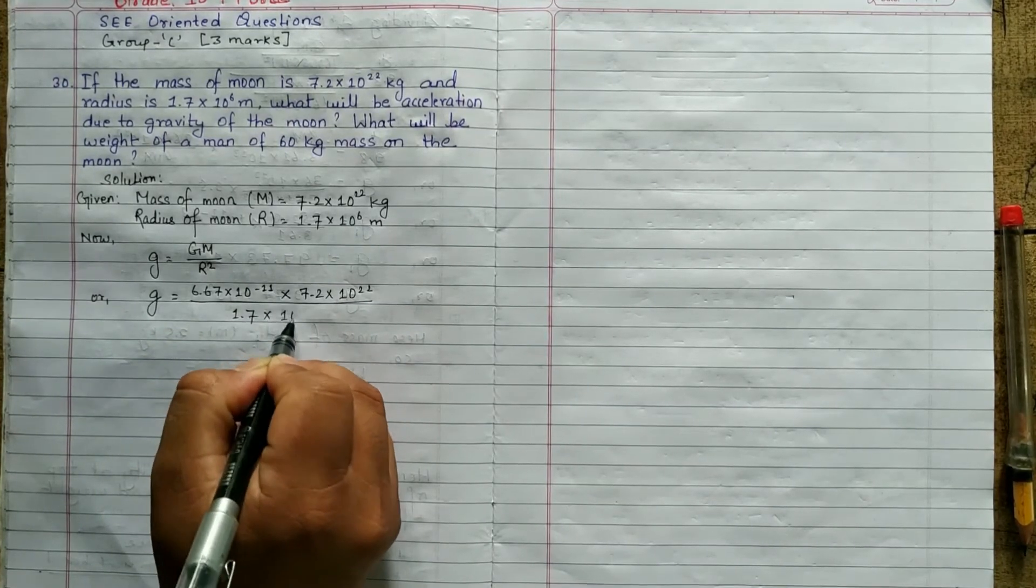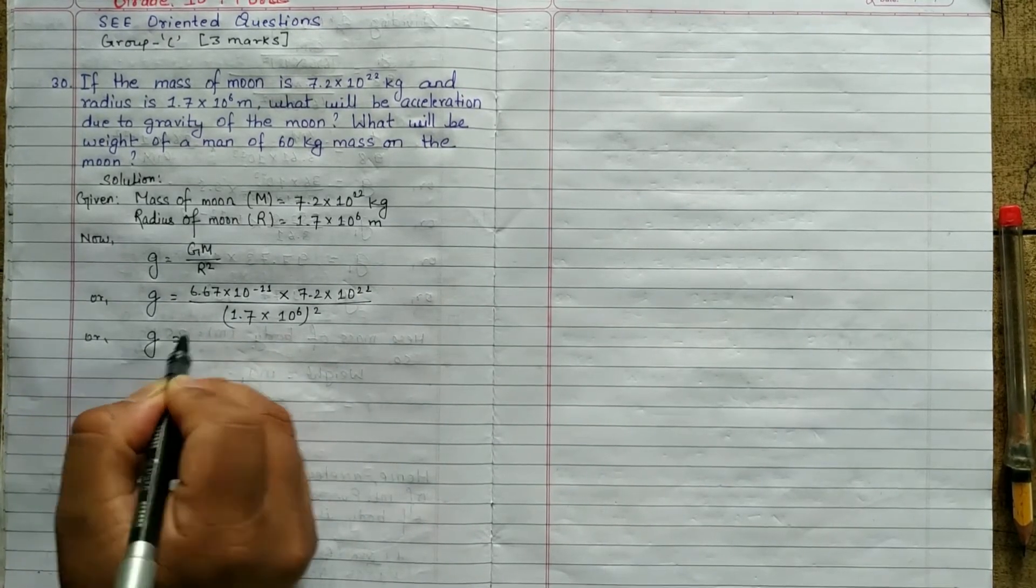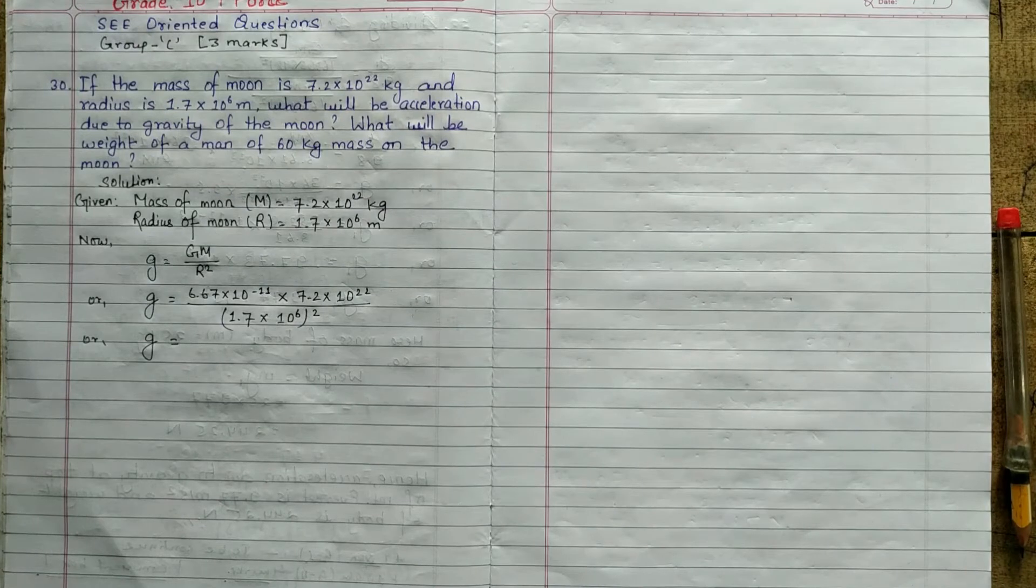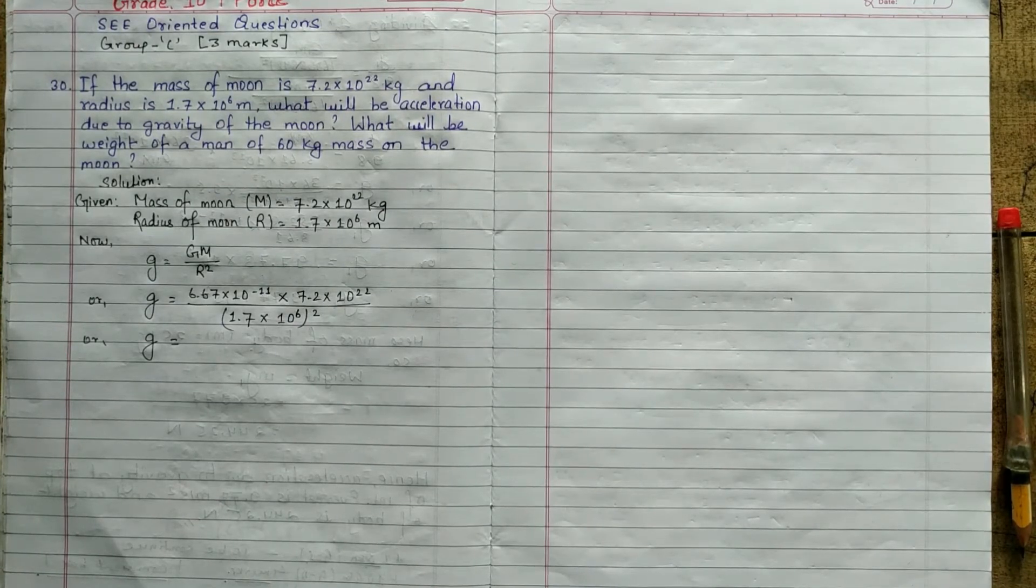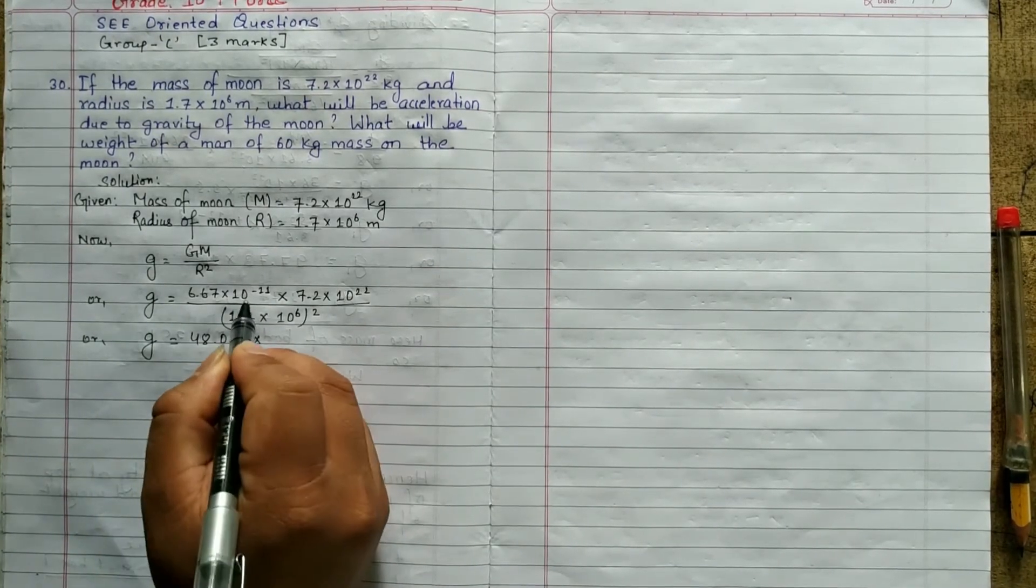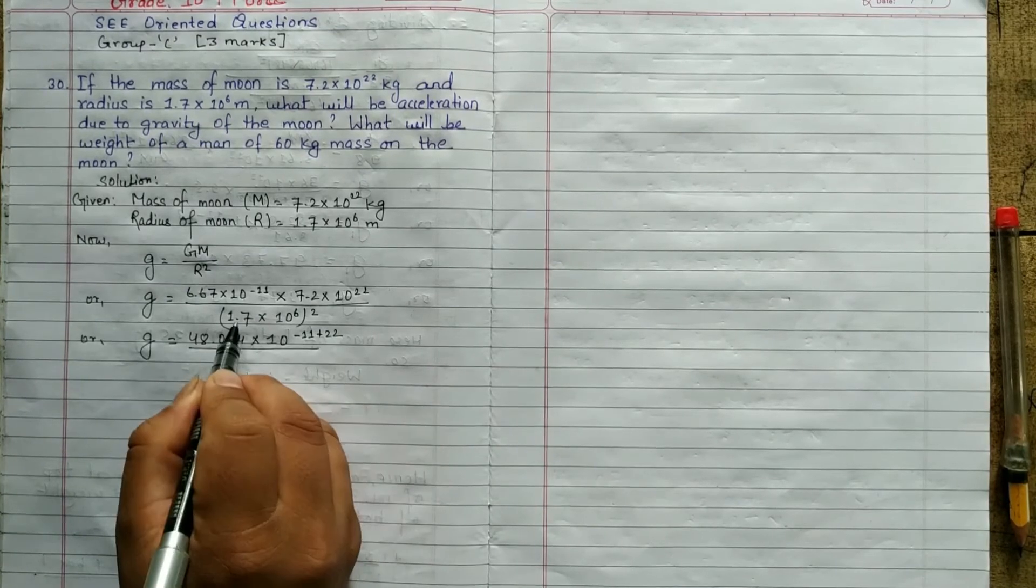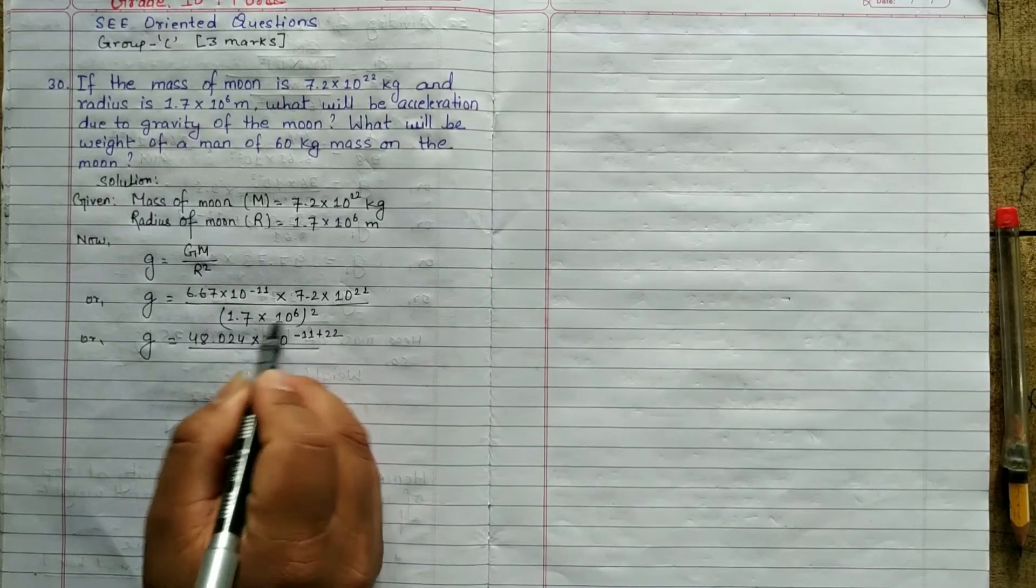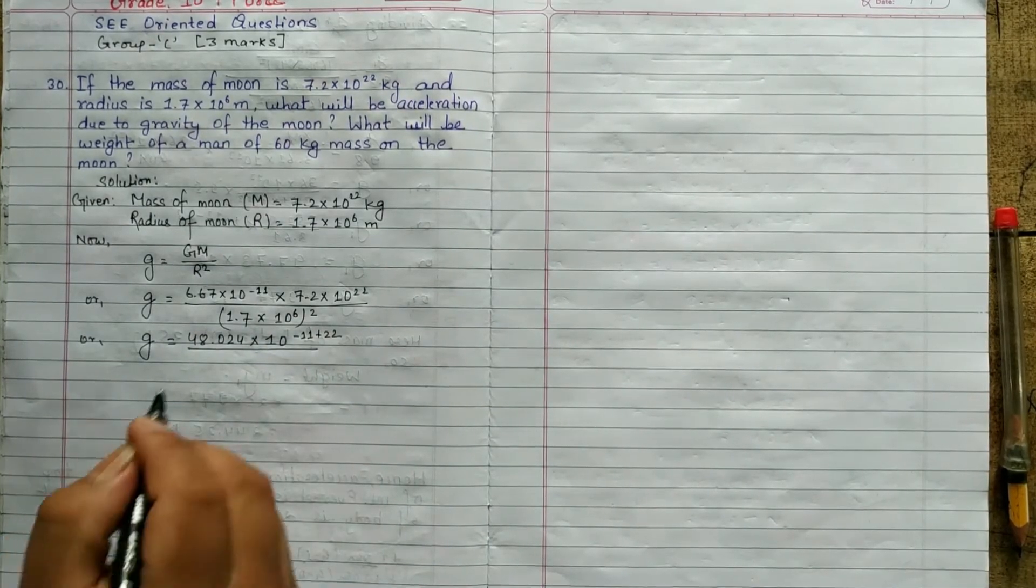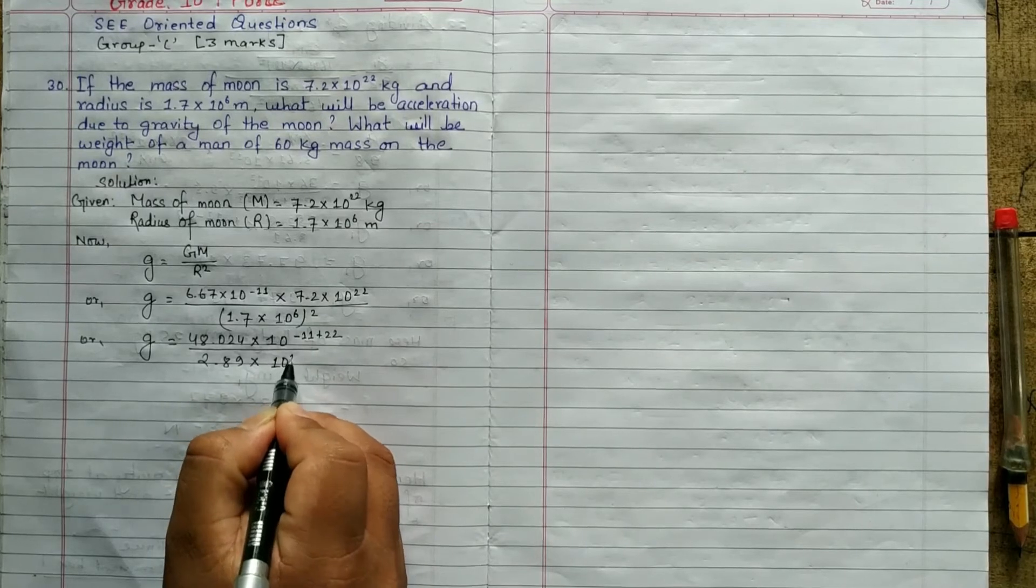Or, g equals to 6.67 into 7.2, multiplied by, 6.67 into 7.2 is 48.024 into 10 to the power -11 plus 22. Then you can write, square, 1.7 square is 2.89 into 10 to the 6 square is 12.